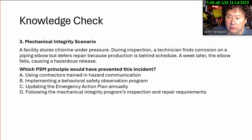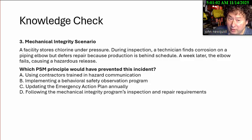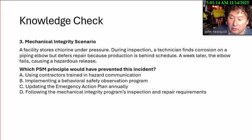Number three — a mechanical integrity scenario. A facility stores chlorine under pressure. During an inspection, a technician finds corrosion on a pipe elbow but defers repair because production is behind schedule. A week later, the elbow fails, causing a hazardous release. Which PSM principle would have prevented this incident? A: Using contractors trained to enhance communication. B: Implementing a behavior-based safety observation program. C: Updating the emergency action plan annually. D: Following the mechanical integrity program inspection and repair requirements. This is easy — there's only one good answer, and it is D.